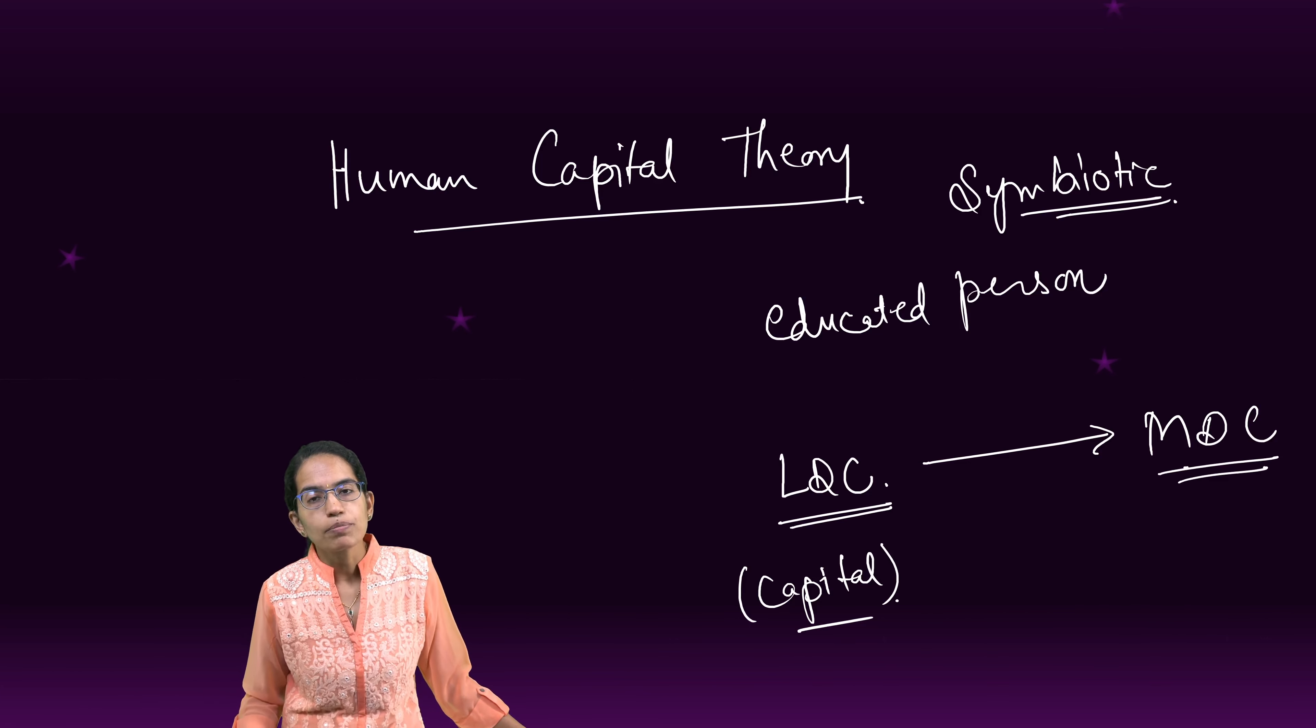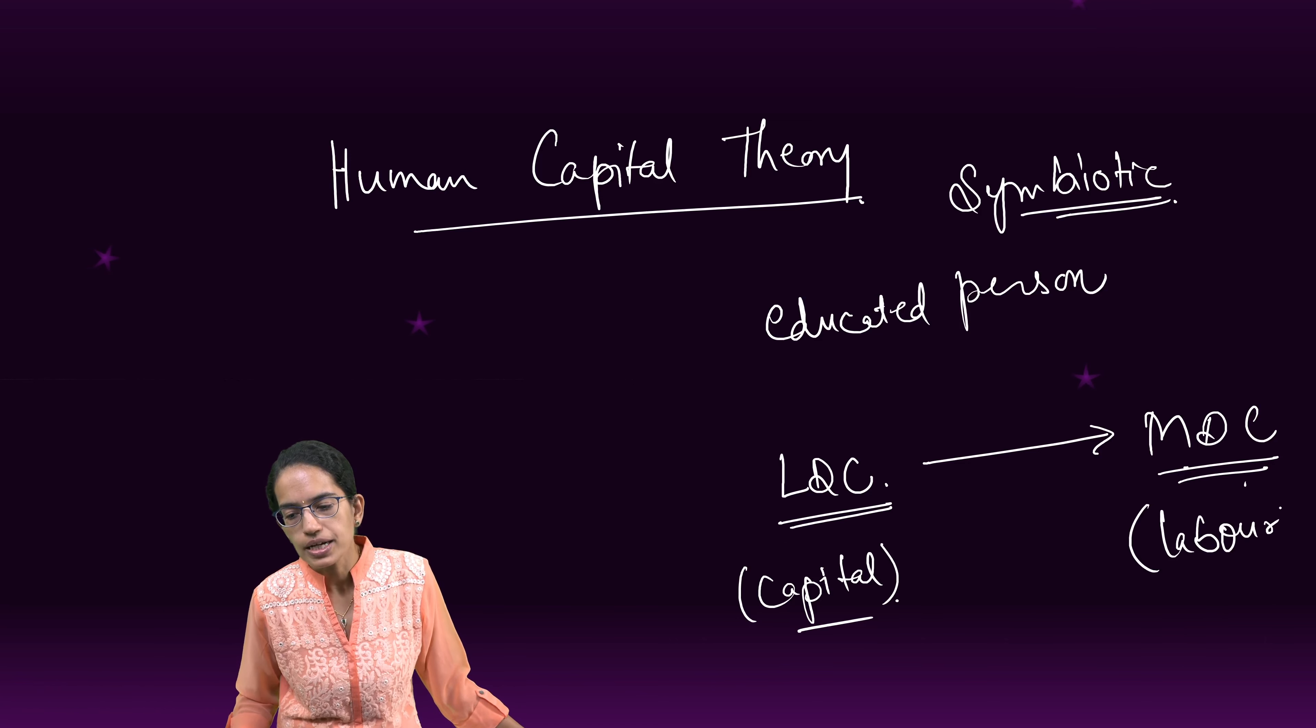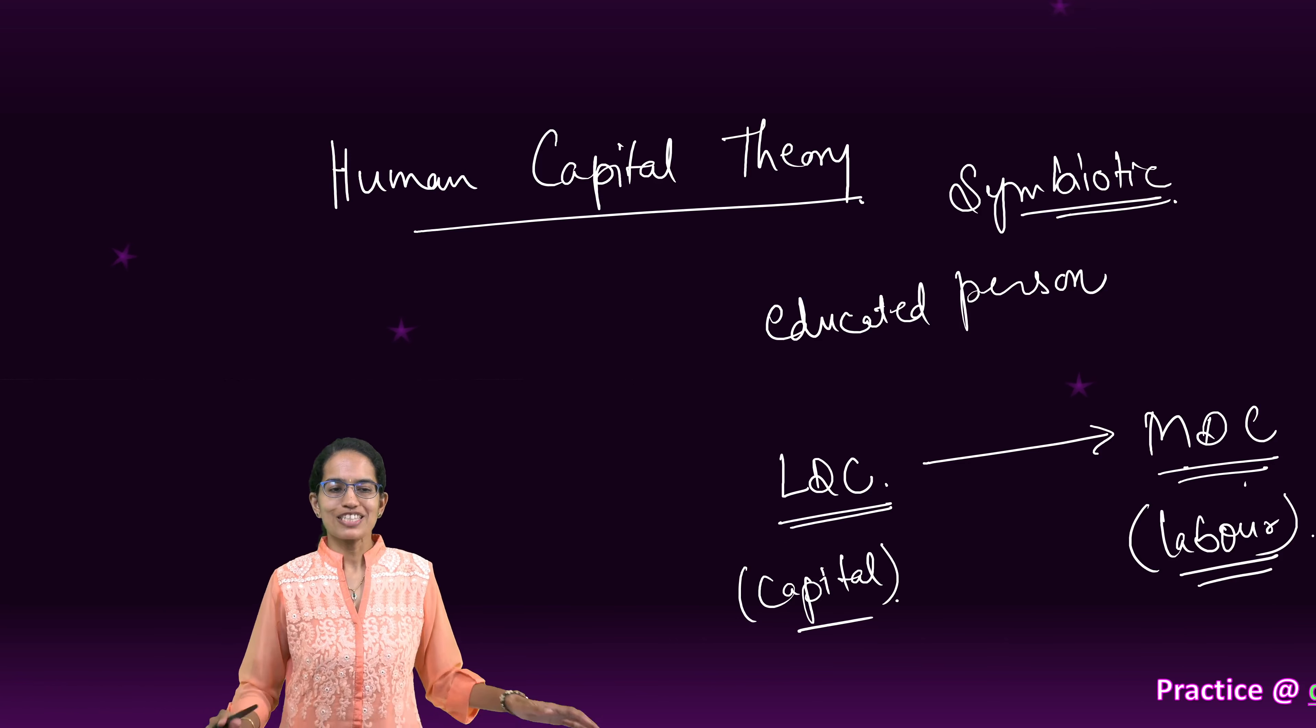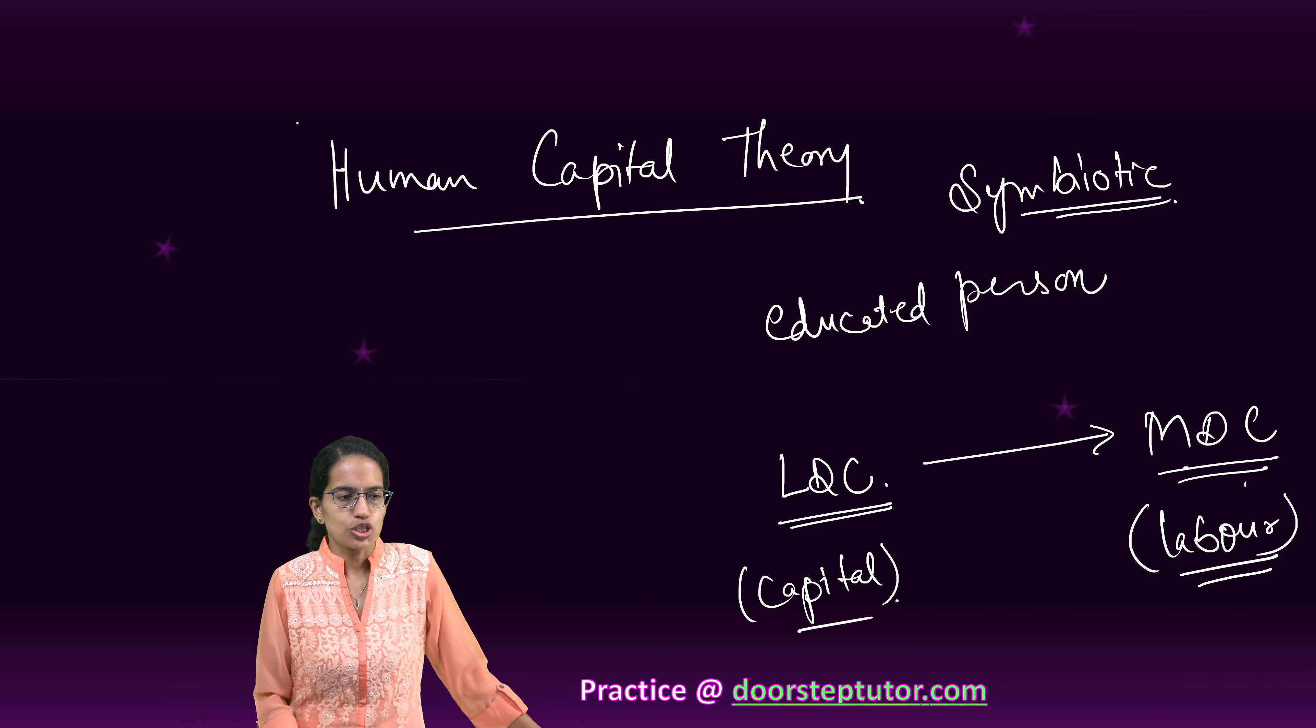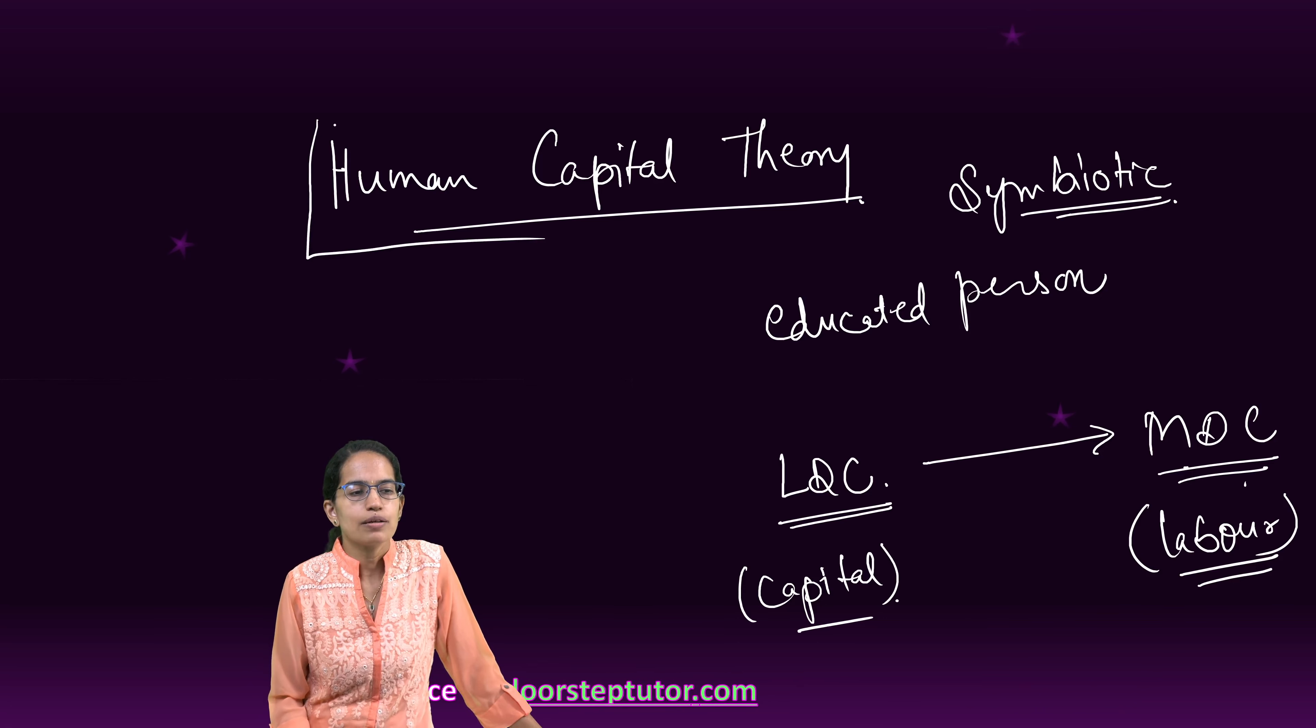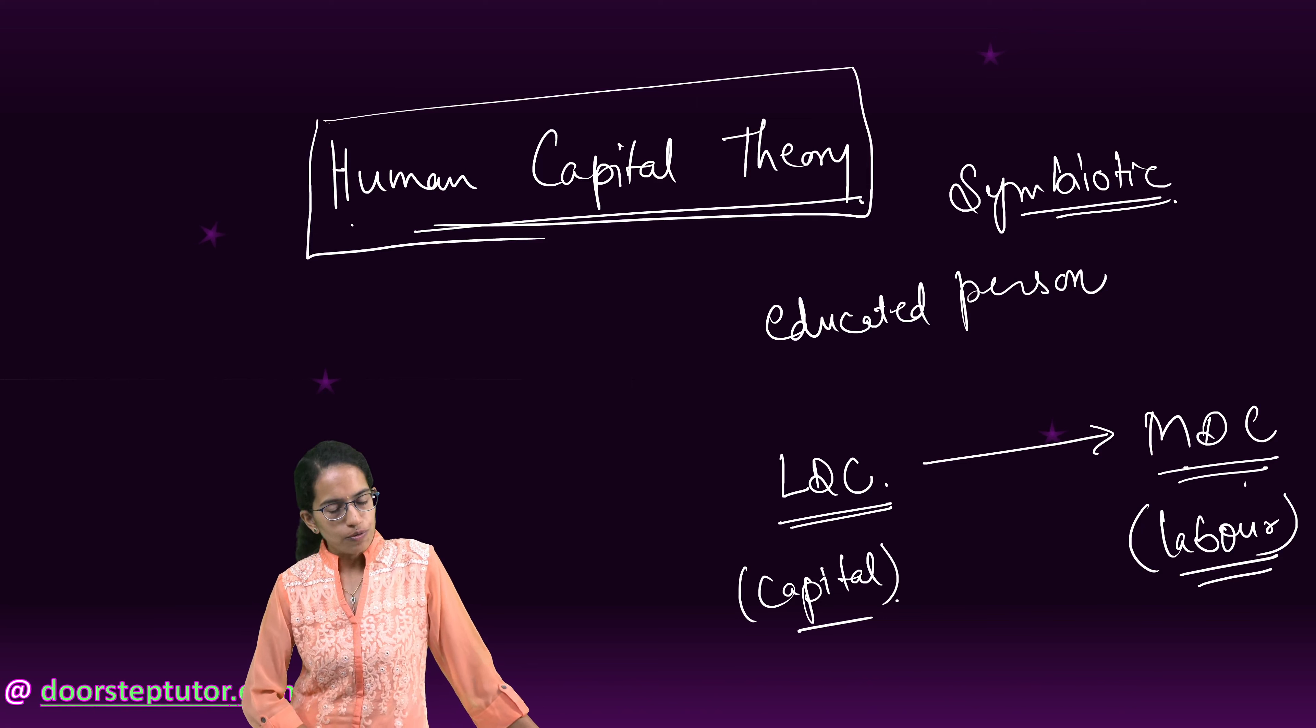And what does this more developed country get? A more developed country would get the labor in return. And therefore we say this relation actually exists as a symbiotic relationship. And this theory under migration is known as human capital theory of migration.